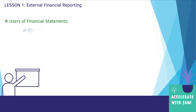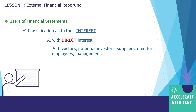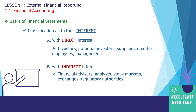Users of financial statements can also be classified by their interest. Users with direct interest include investors, potential investors, suppliers, creditors, employees, and management. Users with indirect interest include financial advisors, analysts, stock market exchanges, and regulatory authorities. The difference is that users with direct interest usually invest in or manage the business, while users with indirect interest usually advise, influence, or represent users with direct interest.